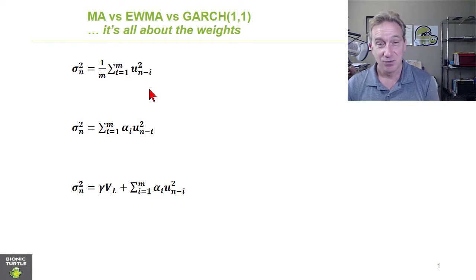You can see we said that this can be stated very simply, that our estimate for variance today is simply the average squared return over the window. Here is a summation of squared returns over M days, and that summation is divided by M.